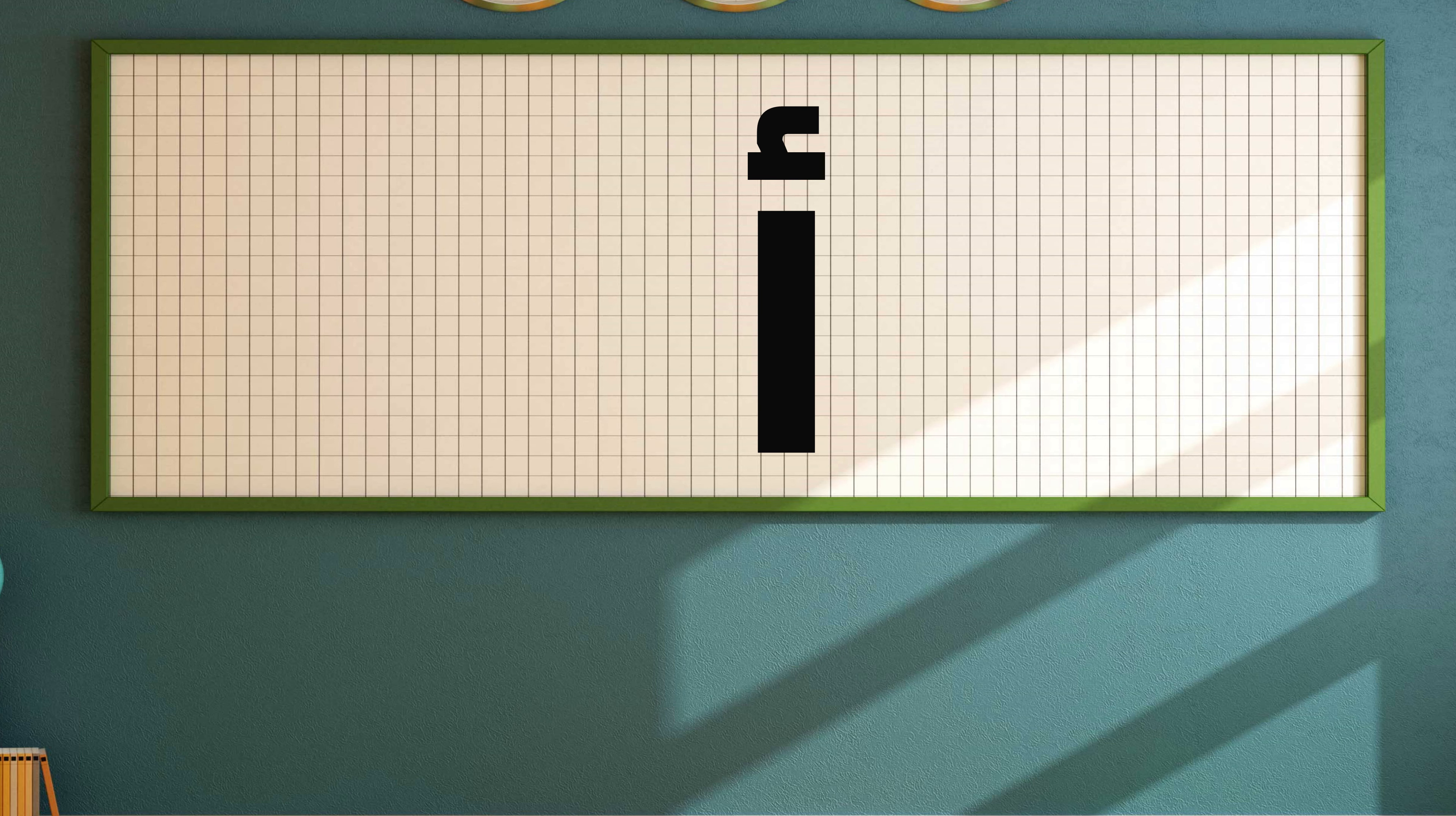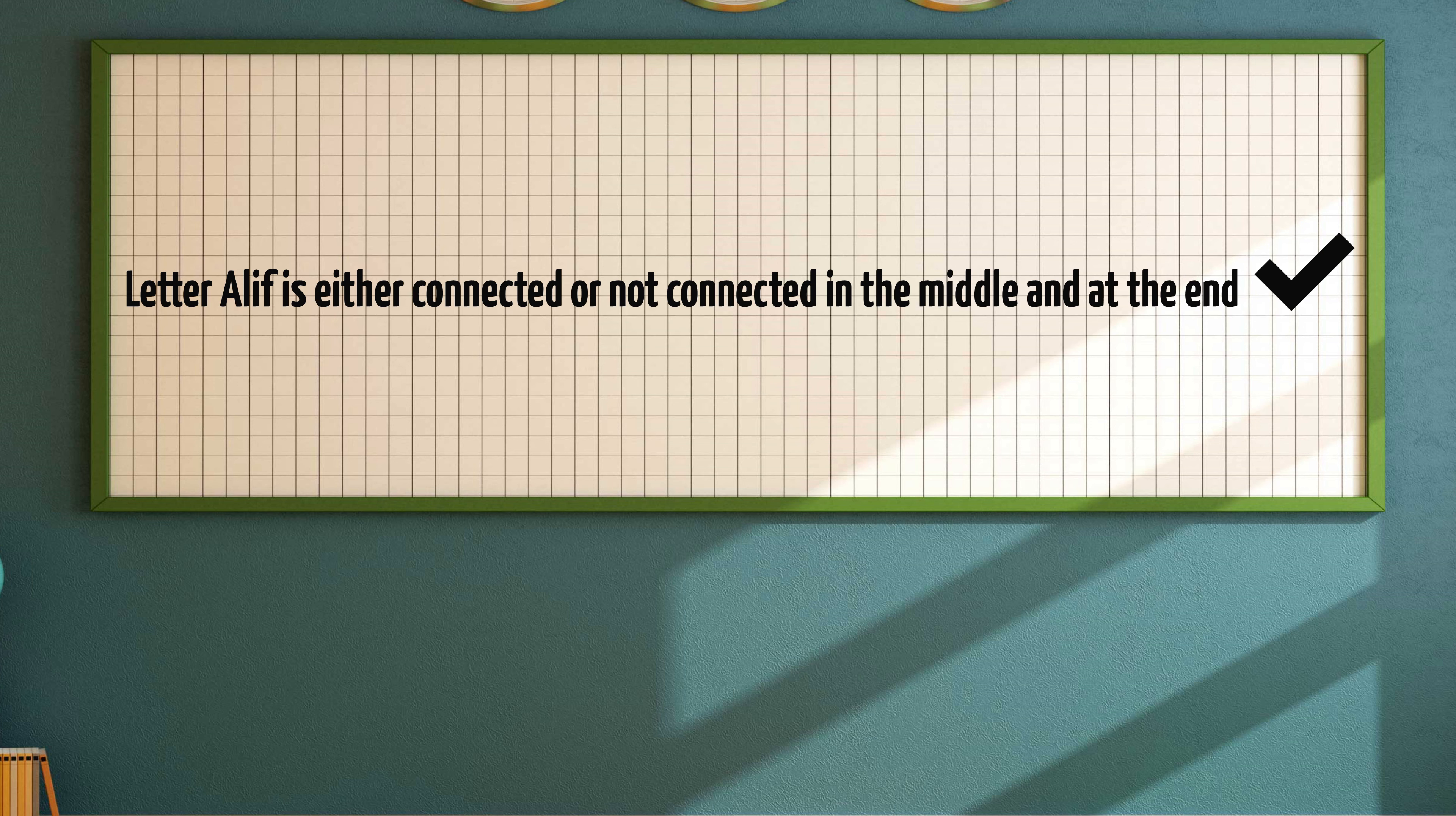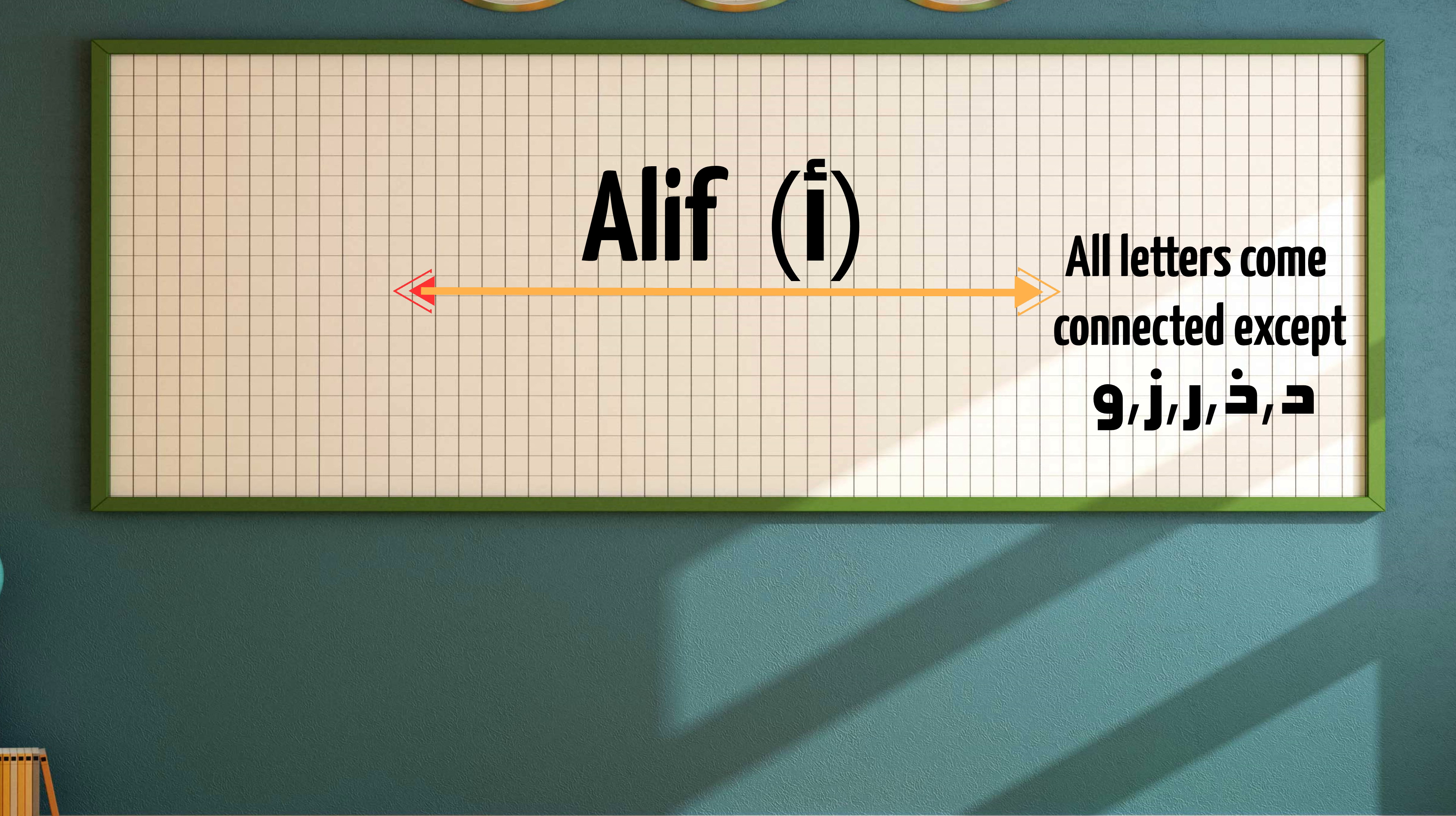So let's start with the letter Alif. As we know already, Alif is never connected in the beginning and can be either connected or not connected in the middle and at the end. Now let's see which letters can be connected to Alif and which not. In Alif connected form, when Alif comes in connected form all other letters can be connected to Alif if they come before it in a word except five letters.